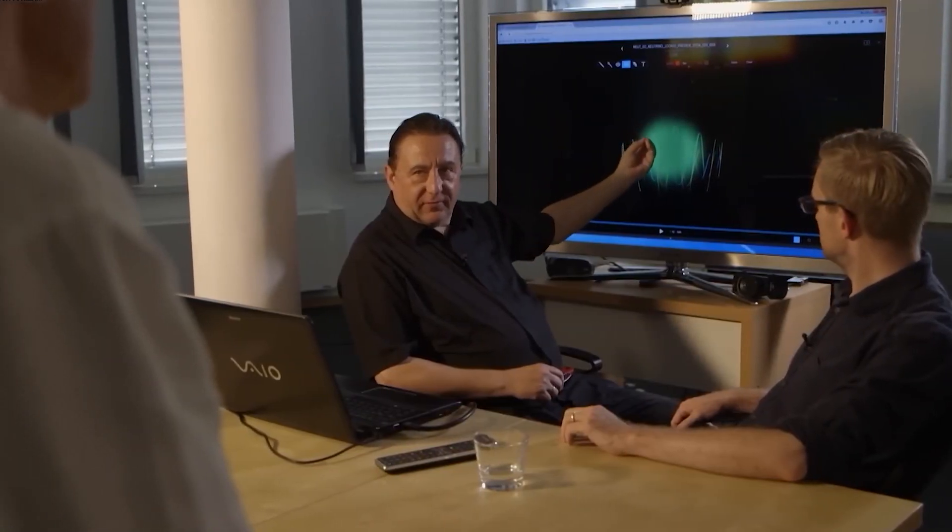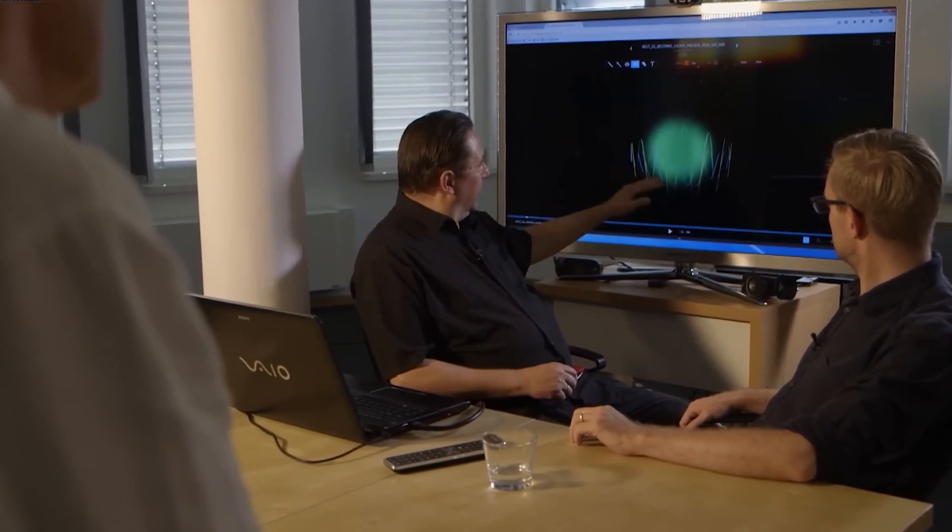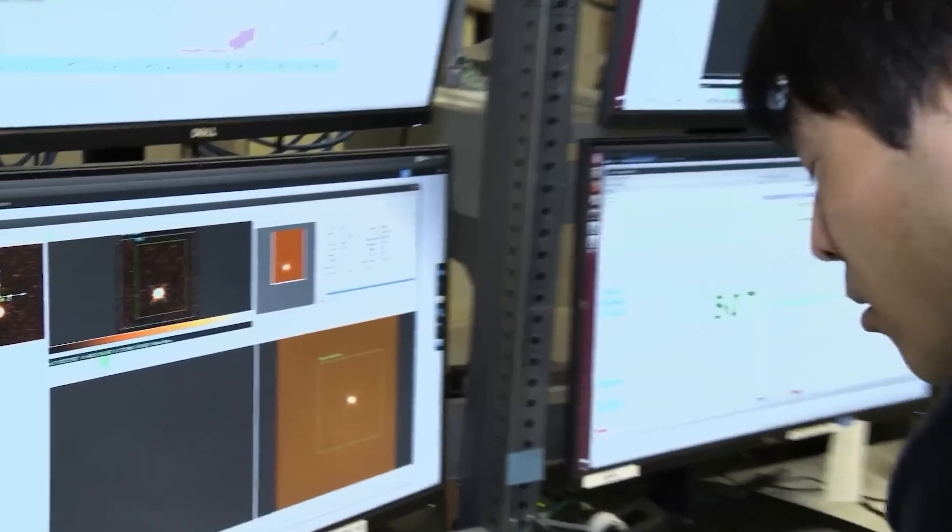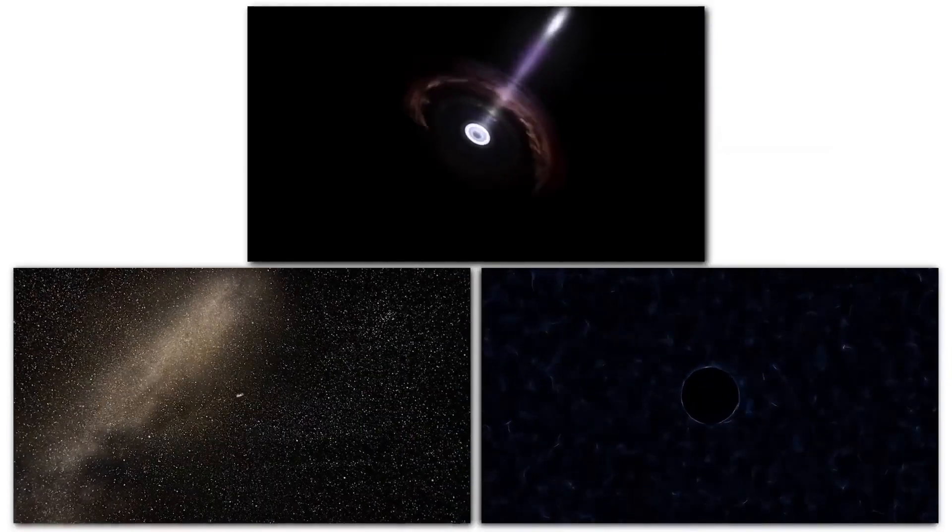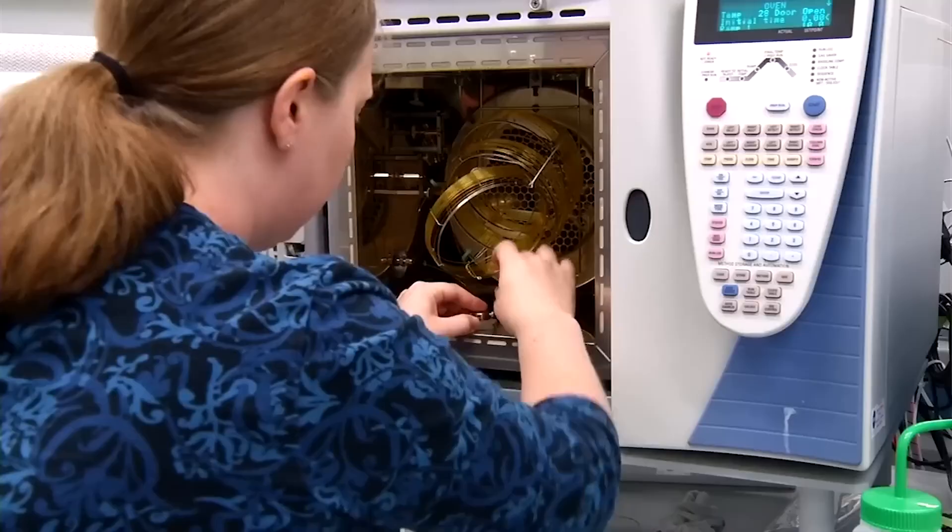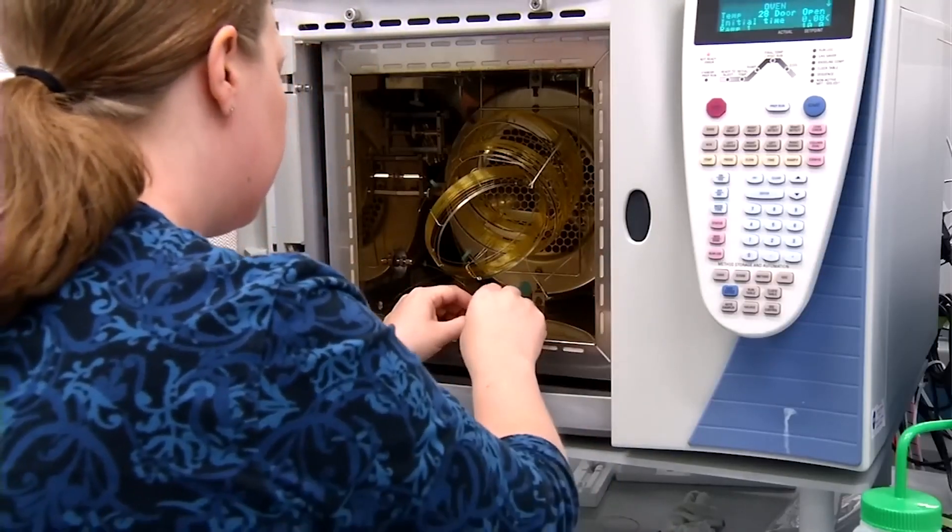Let's take a journey through the history of science and astronomy and explore how the discovery of black holes came to be. For centuries, scientists and philosophers have been fascinated by the mysteries of the universe and the forces that govern it. From ancient civilizations to modern times, humans have sought to understand the cosmos and its workings.